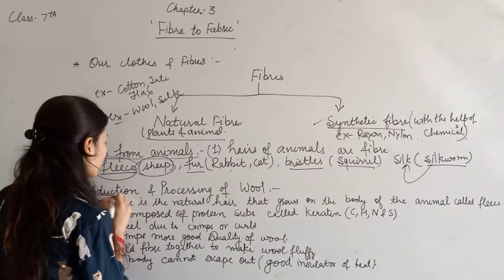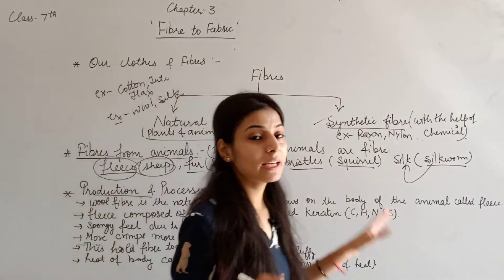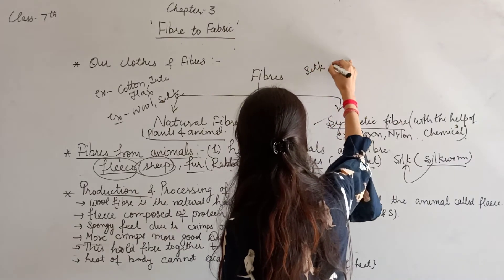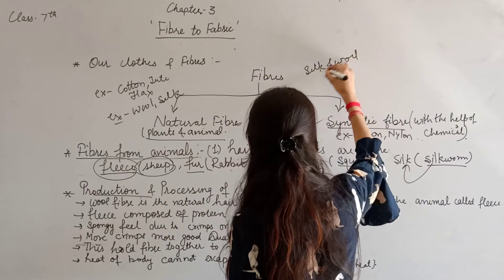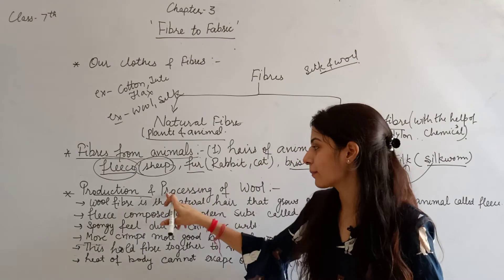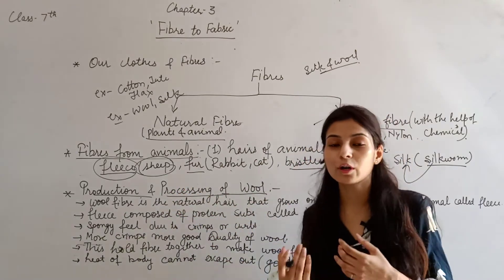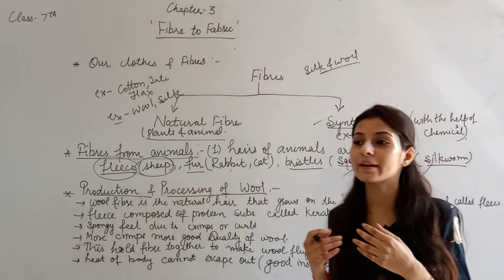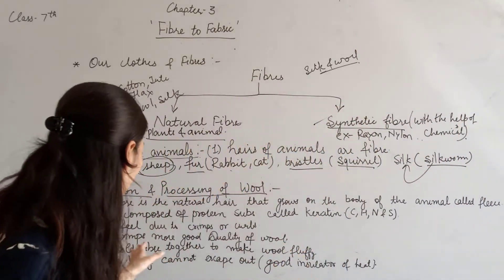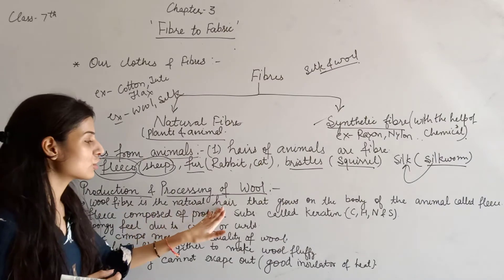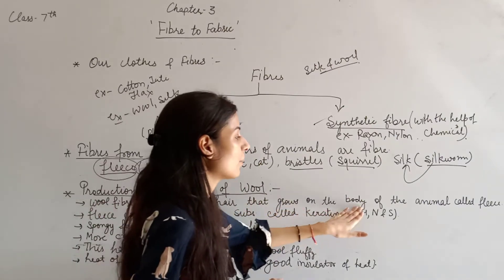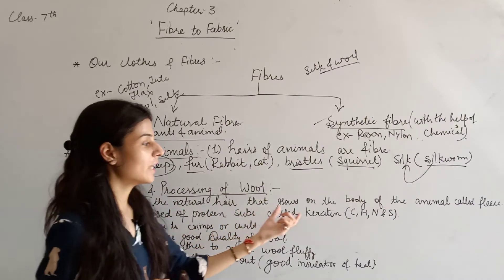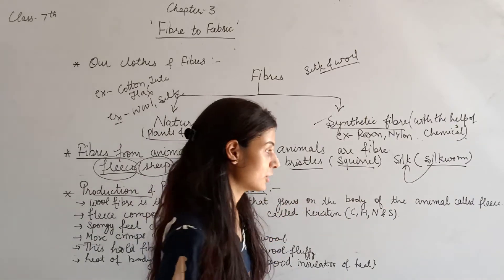Next is production. We have two types of animal fibers: Silk and Wool. First, the production and processing of wool. Wool fiber is natural hair that grows on the body of animals. The fleece — the hair coat of sheep — is used to make wool.